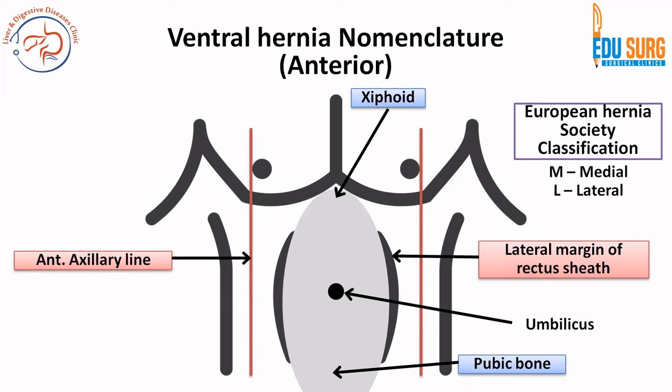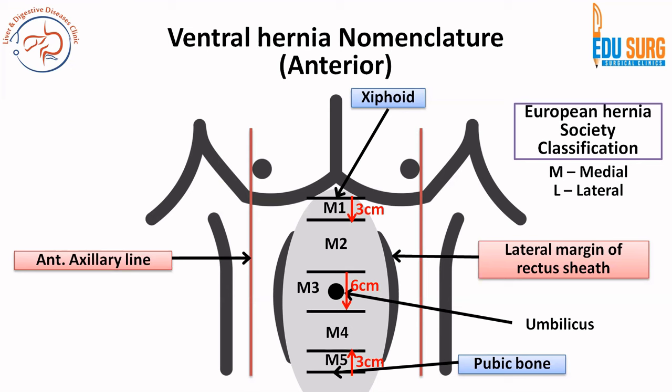The upper and lower landmarks for the medial part of ventral hernias: medial ventral hernias are between the xiphoid and the pubic bone. M1 is within 3 centimeters from the xiphoid. M3 is 3 centimeters above and 3 centimeters below the umbilicus, and M5 is within 3 centimeters above the pubic bone. These measurements refer to the epicenter or the majority of the hernia. Umbilicus is M3; between M1 and M3 is M2, and between M3 and M5 is M4. That is the relatively simplified version of the EHS classification for medial ventral hernias.